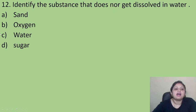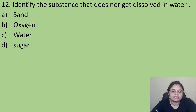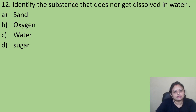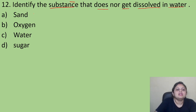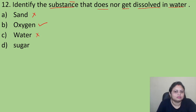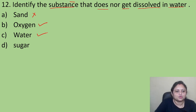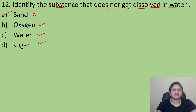Coming to the next question: identify the substance that does not get dissolved in water. Option A: sand. Option B: oxygen. Option C: water. Option D: sugar. Sand is not dissolved in water. Oxygen dissolves in water. Water can mix with water. Sugar is also dissolved in water. So the substance that does not dissolve in water is Option A, sand.